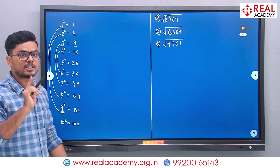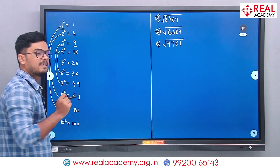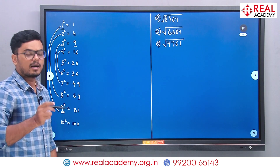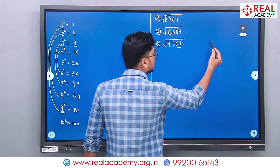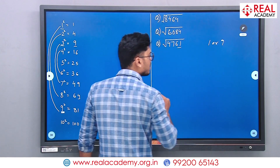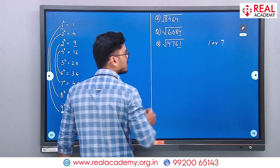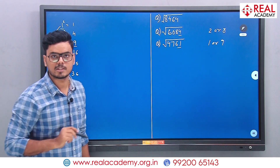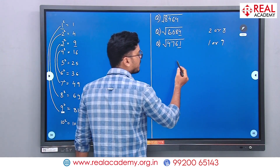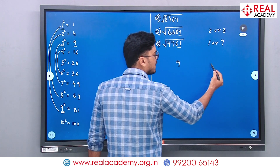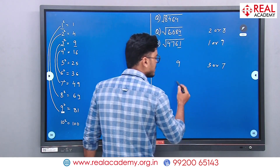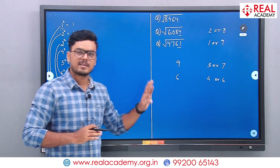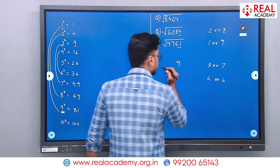You have to remember the units place rules. Just refer to the squares of 1 to 10. If I see 1 at the end, the square root has 1 or 9 in units place. If I see 4 at the end, square root has 2 or 8. If I see 9 at the end, square root has 3 or 7. If I see 6 at the end, square root has 4 or 6. If you remember this, the next step is very easy.